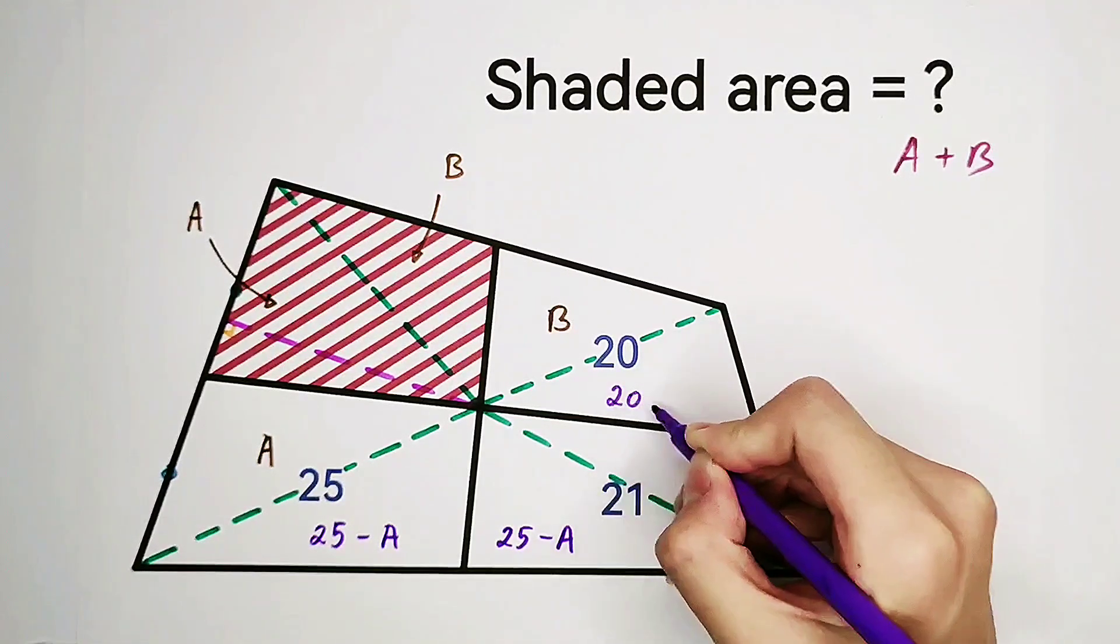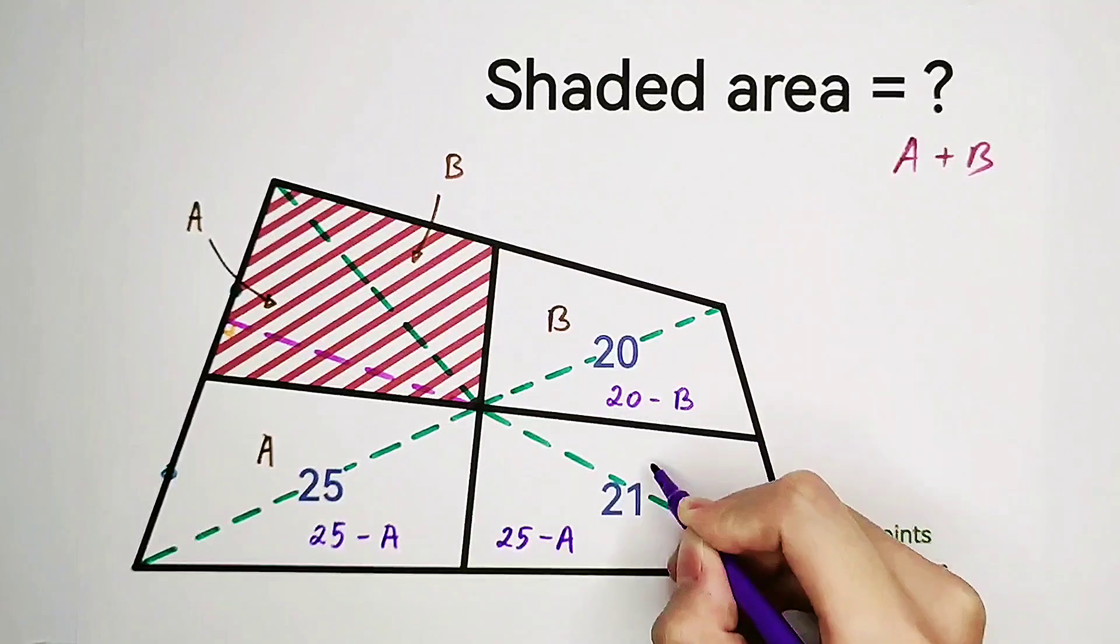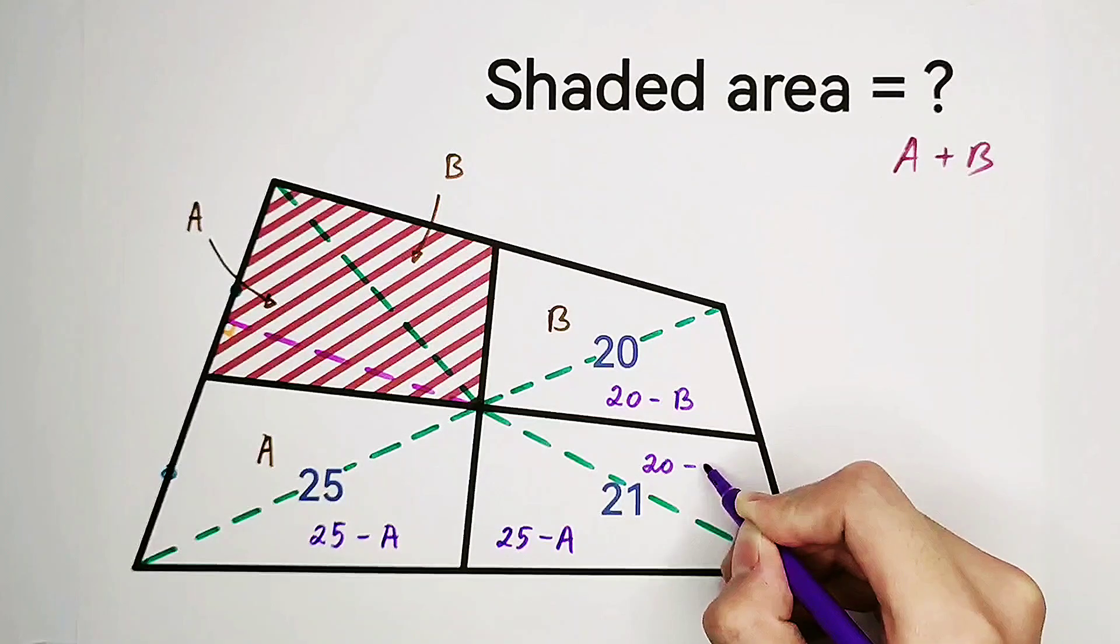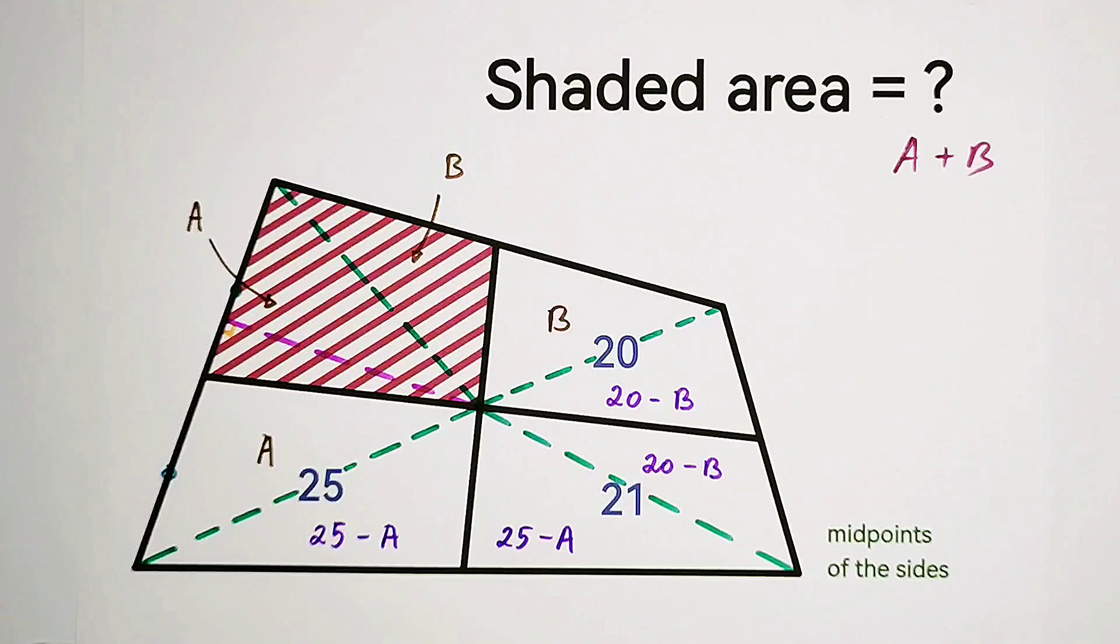Here we have 20 minus B. Here as well. Because they have the same area.